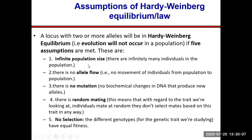The first assumption is the population is infinitely large — you cannot count it. The second assumption is there is absolutely no allele flow; nobody is going anywhere, everybody stays where they are. The third assumption is there is no mutation, no spontaneous mutation. DNA is replicating error-free, or if there were errors, the DNA repair mechanism is functioning perfectly — no errors at all, no mutation.